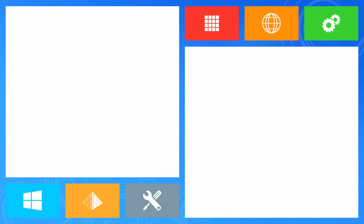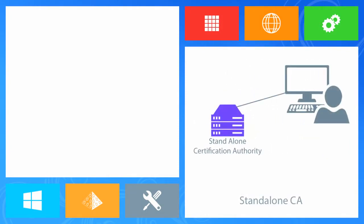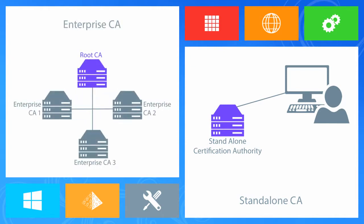Now that we've looked at some of the planning aspects of the CA hierarchy, we want to look at the deployment of certificate authorities. Windows Server 2012 supports the implementation of either root or subordinate CA of a standalone or enterprise type. These types have nothing to do with the hierarchy, but instead are related to functionality as well as configuration storage.